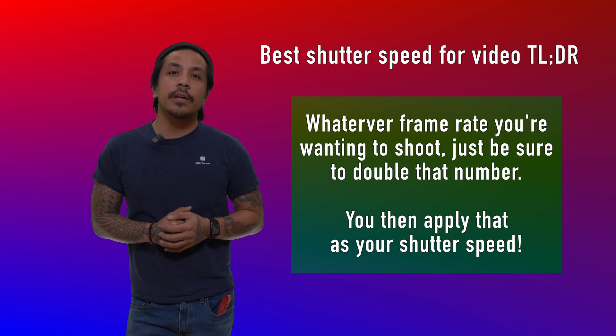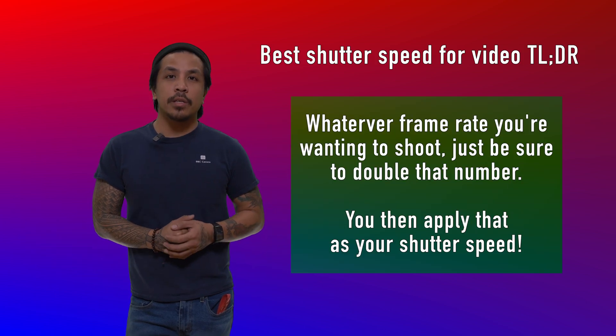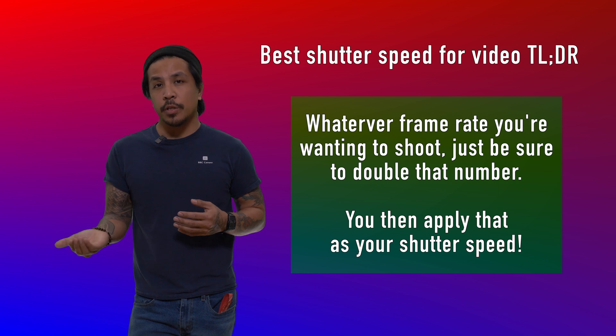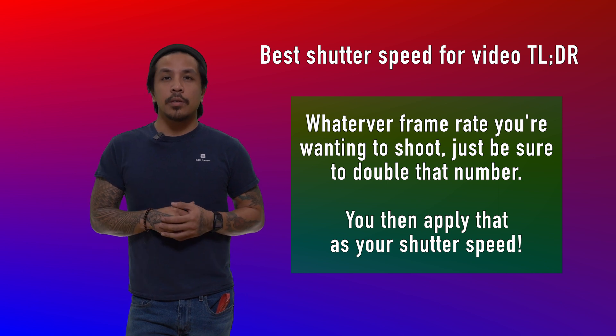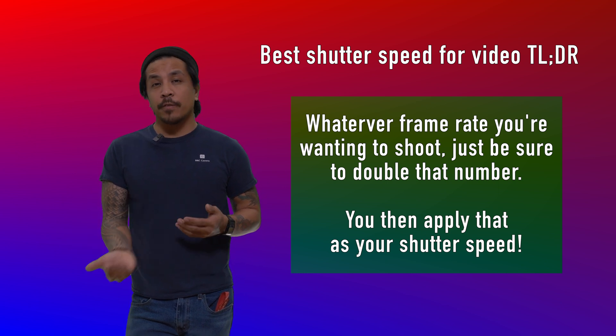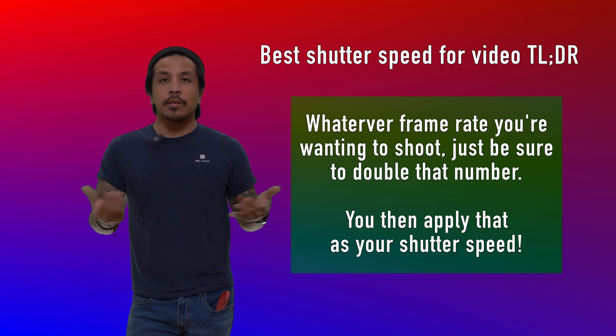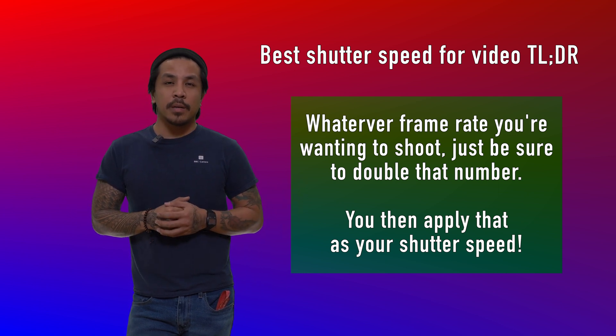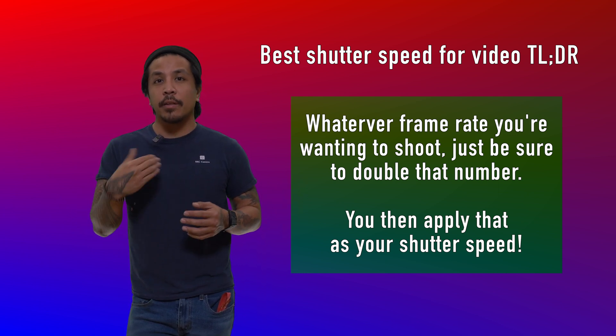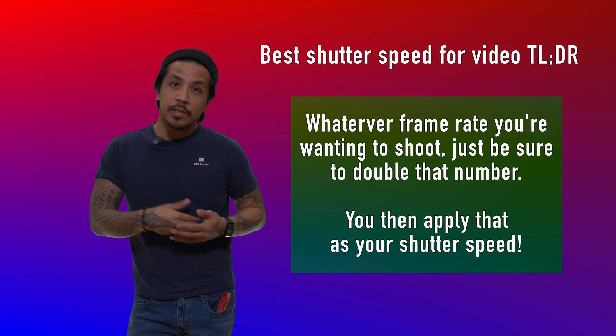Long story short: whatever frame rate you're shooting, you're going to want to double that for your shutter speed. For example, if you're shooting at 24 frames per second, double that is 48 — and most camera systems will float around 50, so you can set it to either 1/50th or 1/60th. If you're shooting 30 frames per second, double that is 1/60th of a second for your shutter speed, and so on.